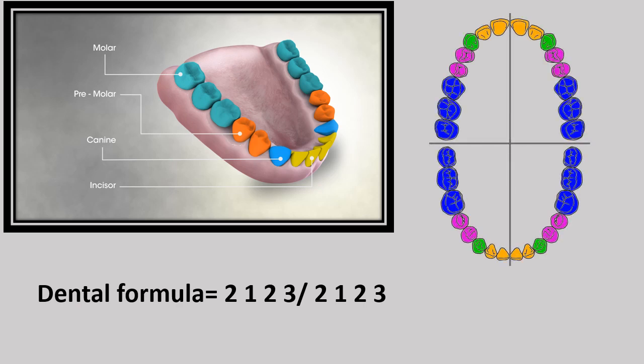The normal adult mouth has 32 teeth, which have erupted by about age 13. In adult humans, incisors are 8 in number, canines are 4 in number, premolars are 8 in number and molars are 12 in number. Calculated for a half jaw, they are 2-1-2-3 in number, so our dental formula becomes 2123/2123.